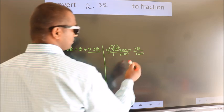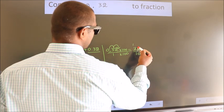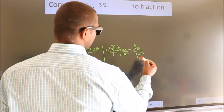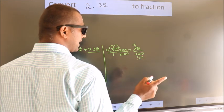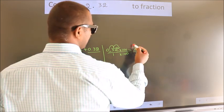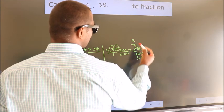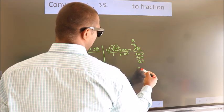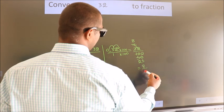Now, I cancel with 2. 2 1s, 2 6s, 2 5s. This 0 as it is down. I cancel with 2 again. 2 8s, 2 25s. So, the fraction we got is 8 by 25.